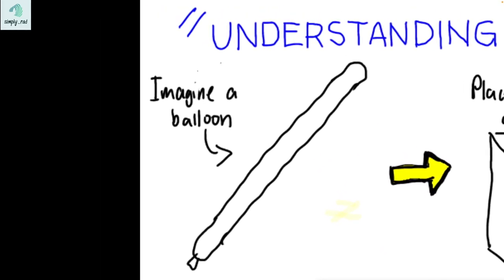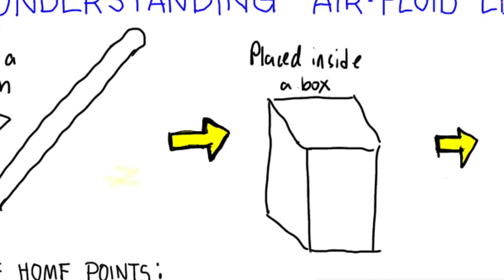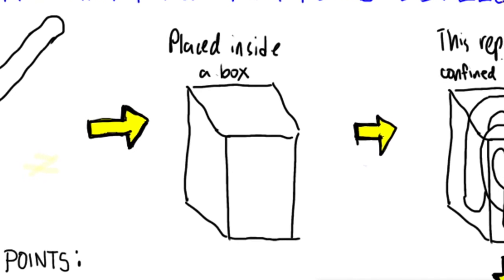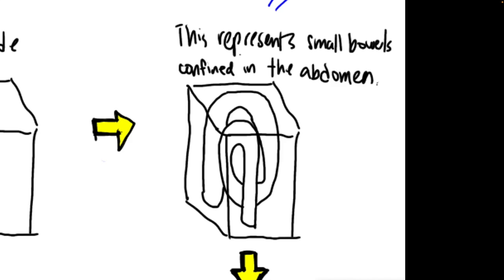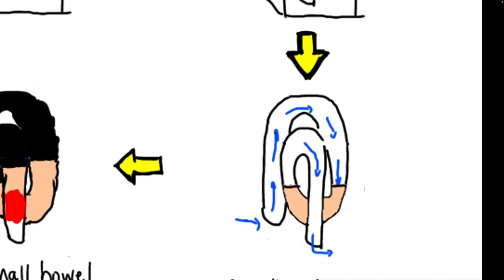Imagine a balloon to represent the small bowels. Now let us place this balloon in a small box — this would represent the small bowels confined to the abdomen. Even if the bowels are grouped and stacked on themselves, as long as there is peristalsis and no obstruction, the bowels will not be dilated. The normal diameter of the small bowel is 3 cm or less.